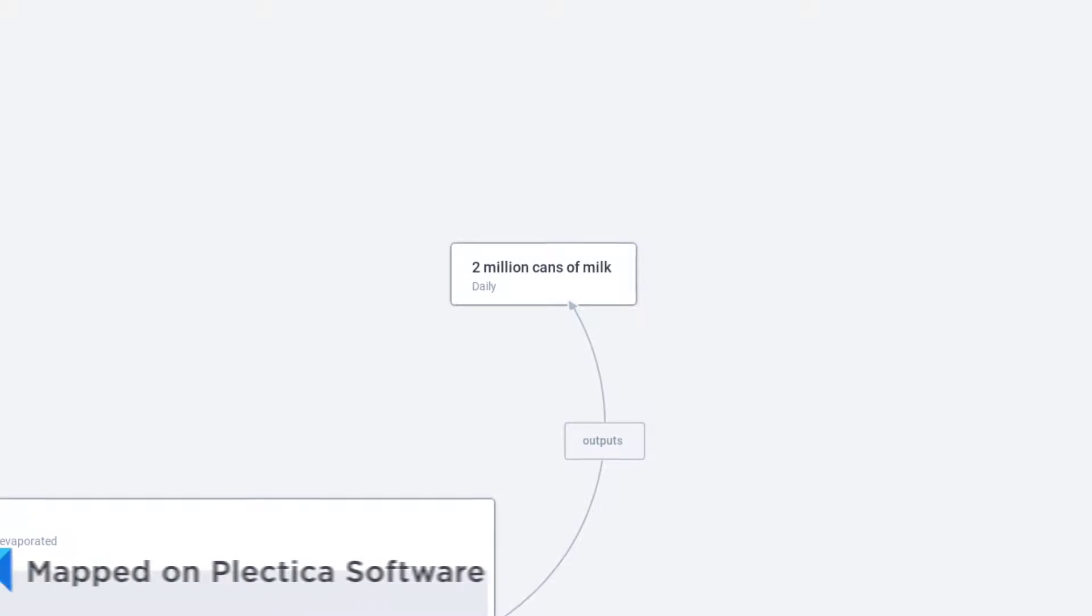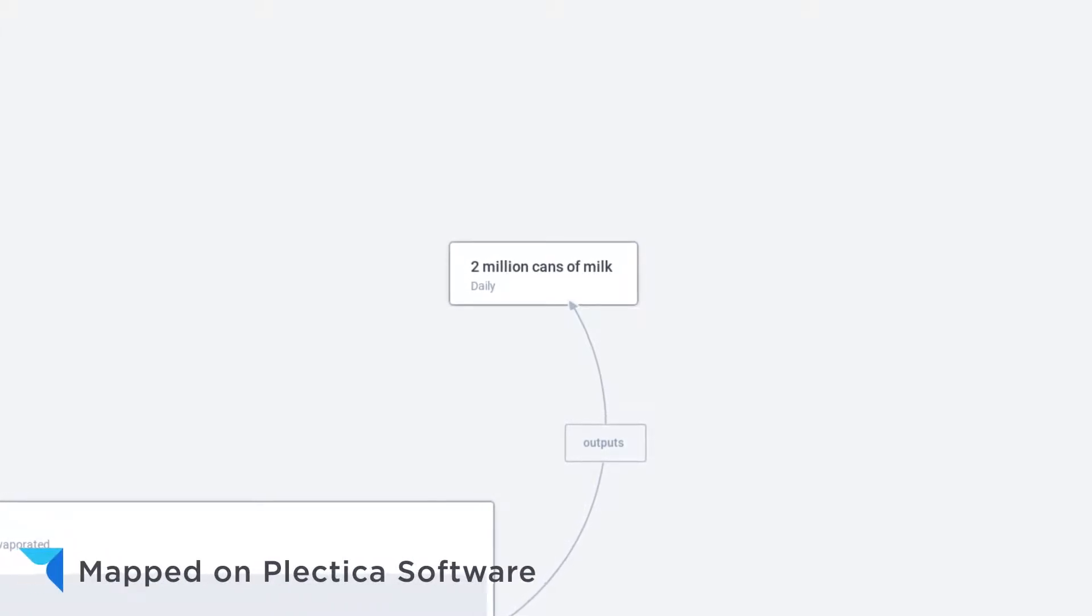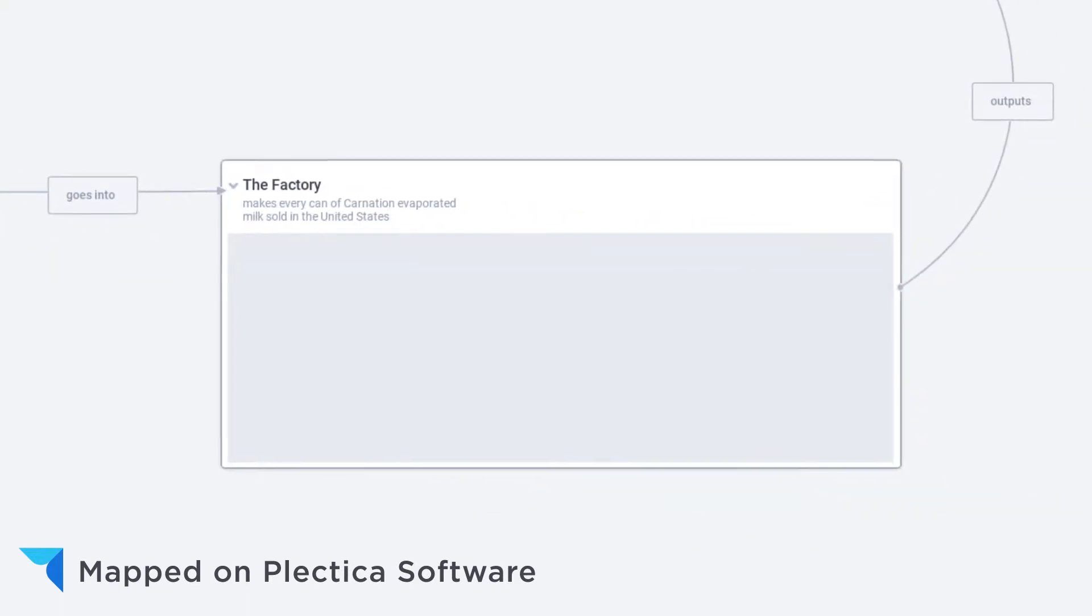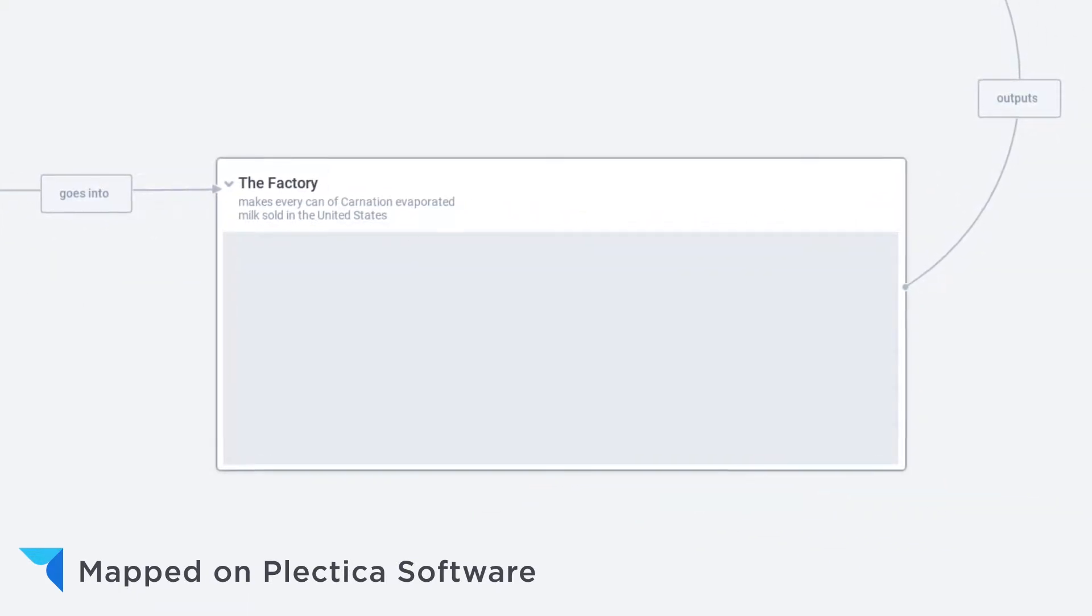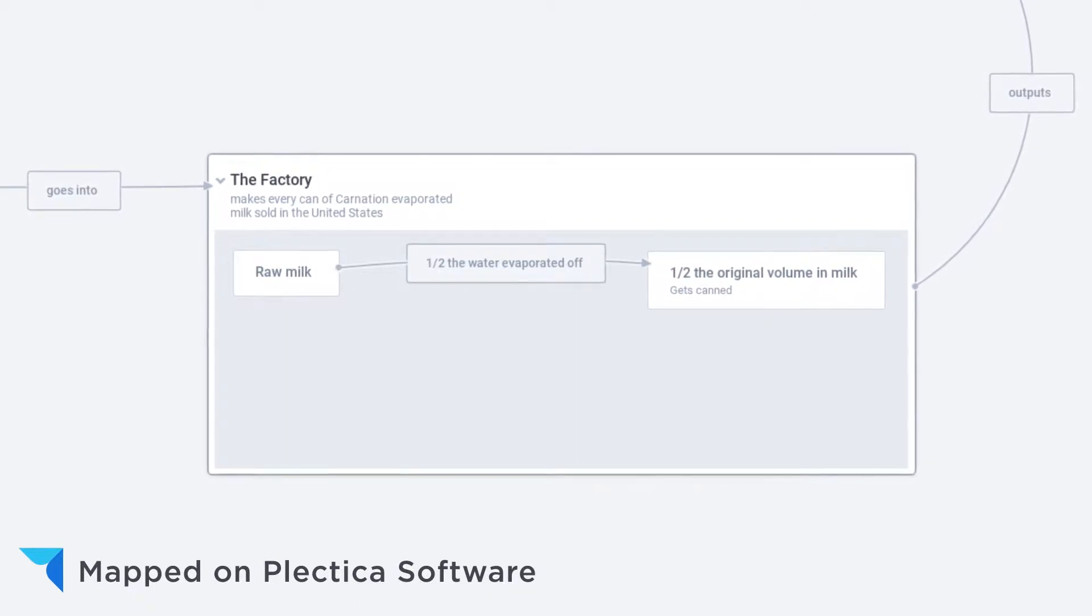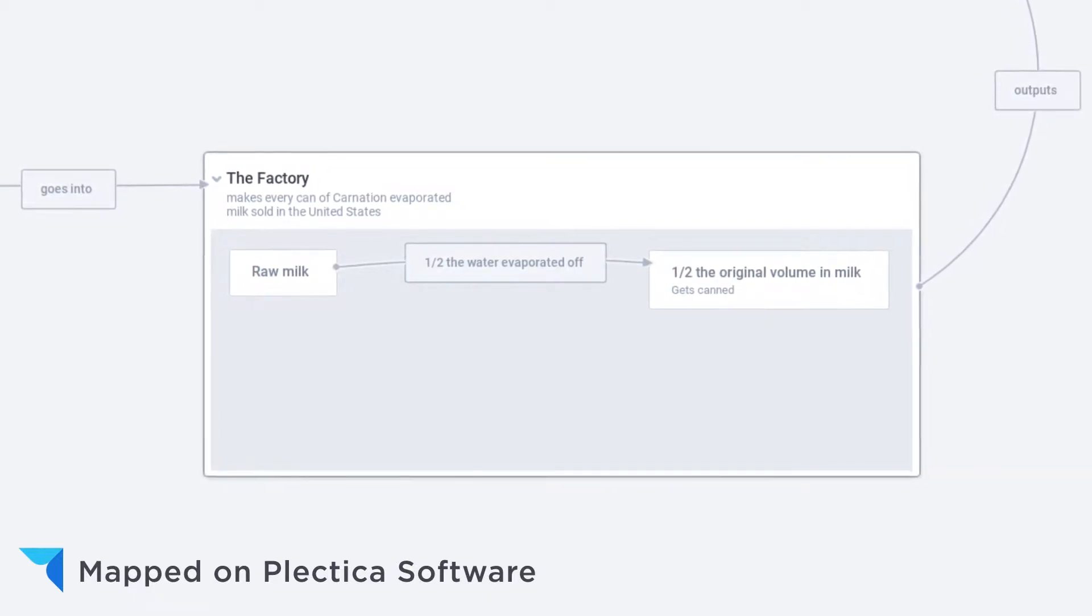Here's how the factory works. They make two million cans of milk a day. To do that, they take in 400,000 gallons of raw milk. Wait for it. Here's the complicated process for making evaporated milk. They evaporate half the water out and they can what's left. That's it. That's the process.